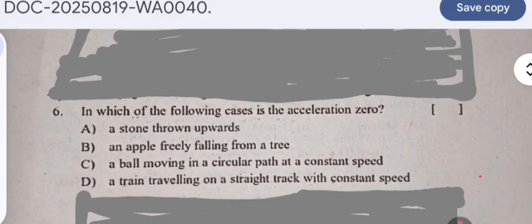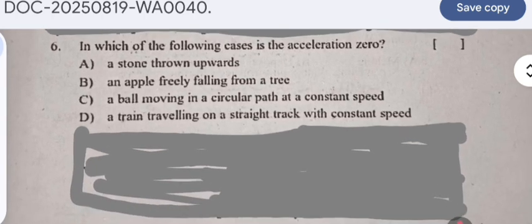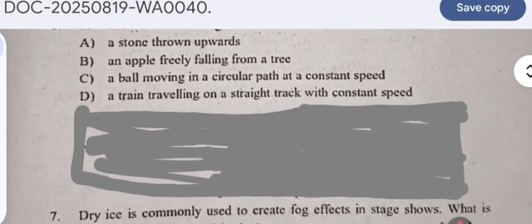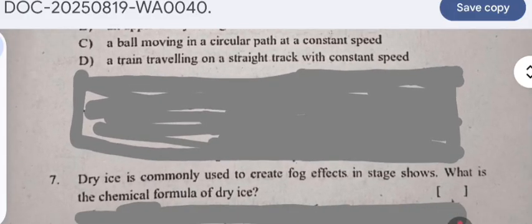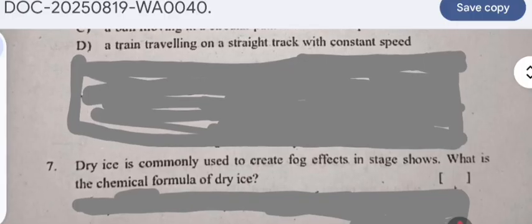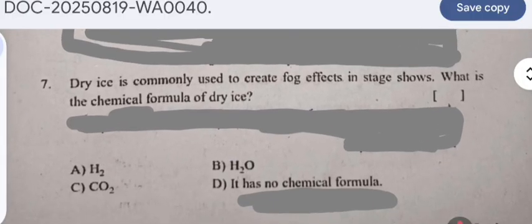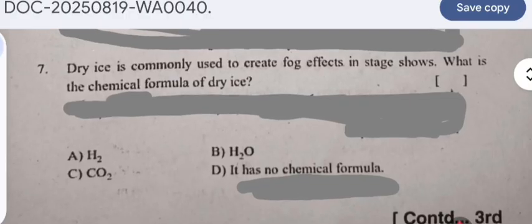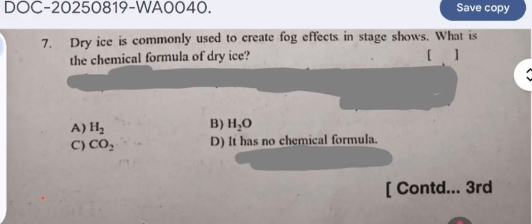Question 6: In which of the following cases is the acceleration zero? A stone thrown upwards, an apple falling from a tree, a ball moving in a circular path at constant speed, or a train traveling on a straight track with constant speed. Question 7: Dry ice is commonly used to create fog effects in stage shows. What is the chemical formula of dry ice?